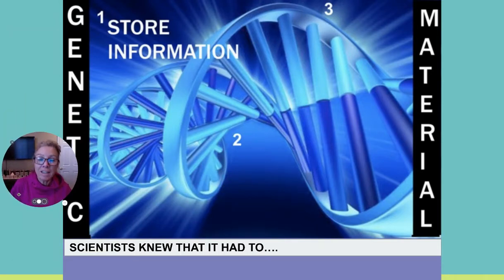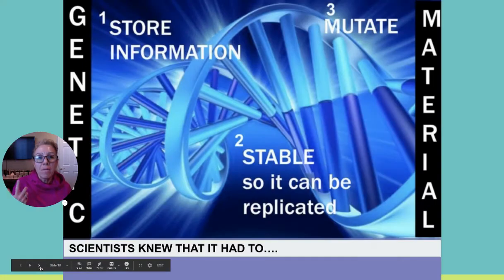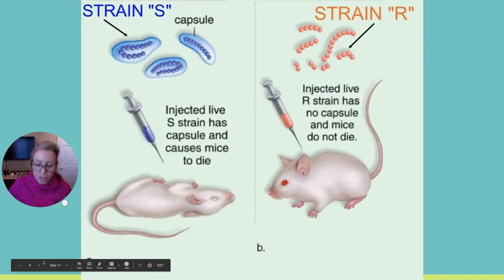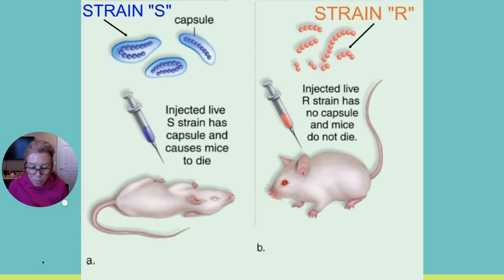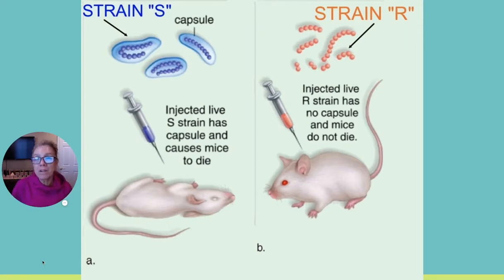Whatever the genetic code was, they knew it had to store information, be stable so it could be replicated, and be able to mutate to provide variety. On your notes under 'transformation of bacteria' section 12.1, scientists trying to discover what our genetic material was knew it had to: (a) store information, (b) be stable so it could be replicated accurately, and (c) be able to undergo mutations.